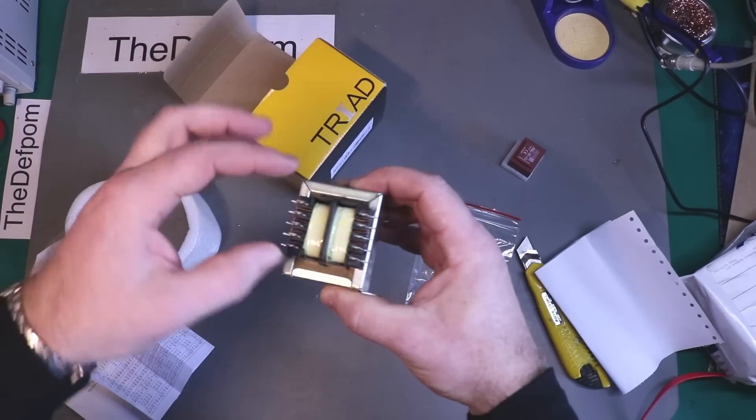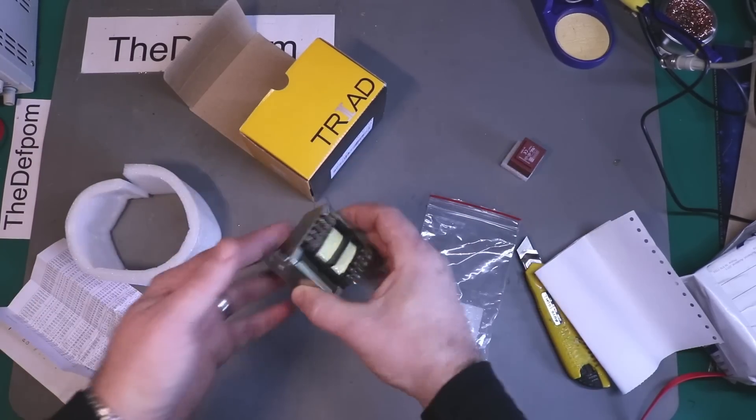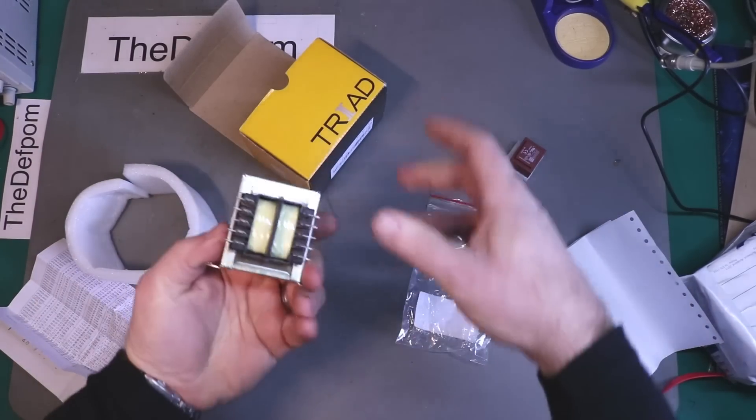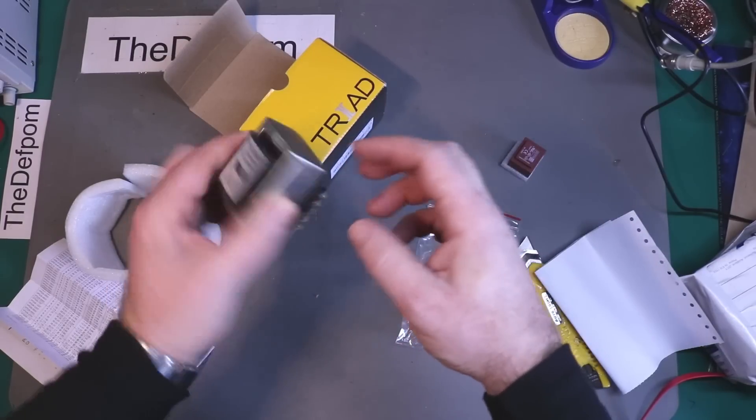So I'm going to put 230 on one side, 115 on the other, because this is much smaller than the transformer I'm currently using, which is why I bought this one. So that's what will be used in the leakage tester.